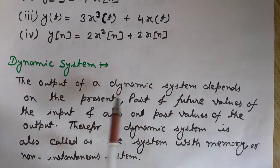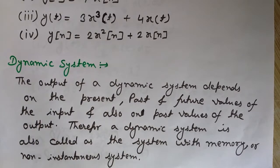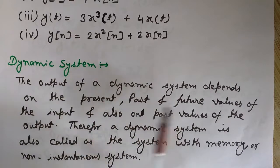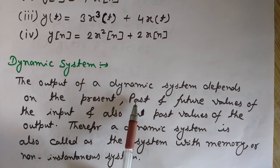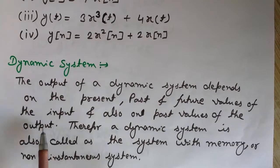Now let's discuss dynamic systems. The output of a dynamic system depends on the present, past, and future values of the input, and also on past values of the output. While in instantaneous systems the output depends only on the present value of the input, here the output depends on the input applied at the current moment, inputs applied in the past, future inputs that will be applied, and also on past output values.